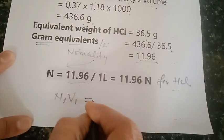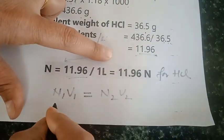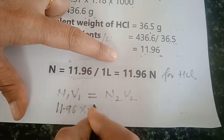Now we are going to calculate how much volume of this concentrated HCl we need to take to prepare one normal HCl solution in 100 ml.